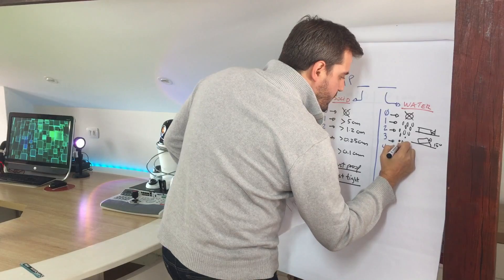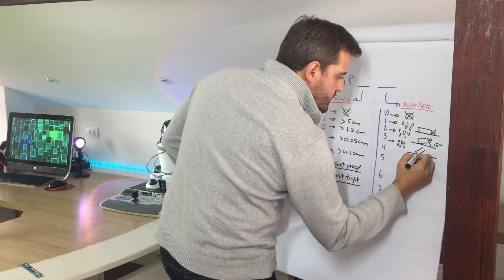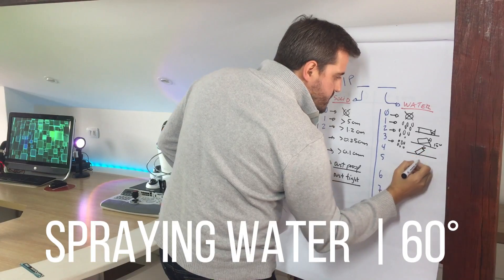The third one, the number three, is the camera receiving sprays or drops at 60 degrees.